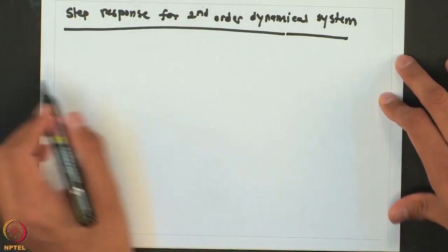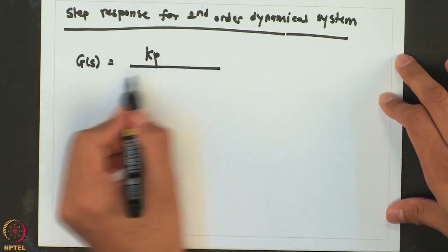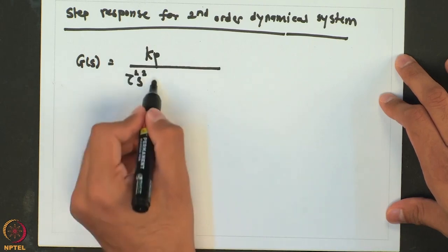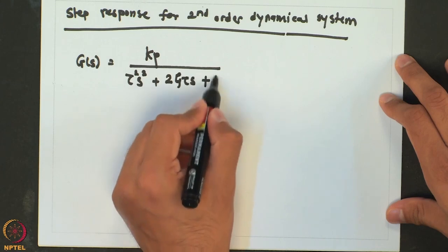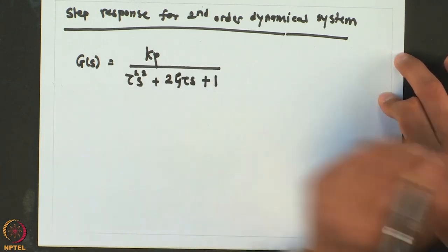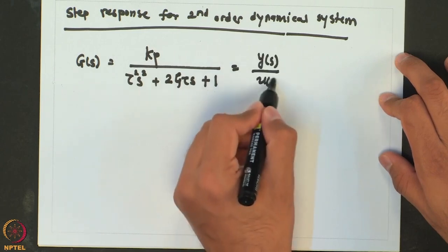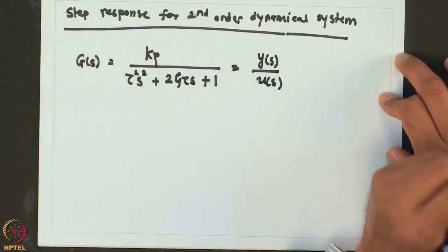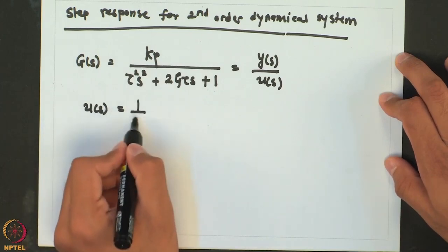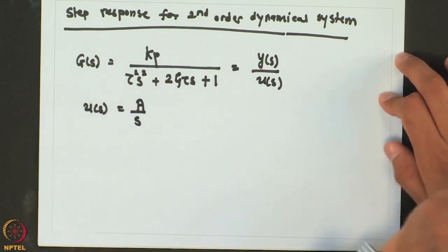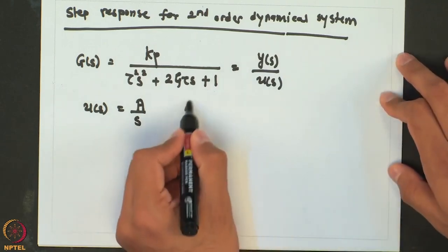We will work with a general transfer function of a second order system which is KP over tau squared S squared plus twice zeta tau S plus 1, which is equal to Y(S) over U(S), and we are looking at a step response. So the transfer function of the input is going to be A over S, where A is the step size.